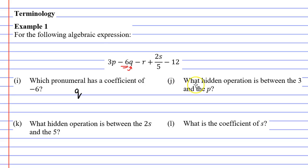Looking now at question J, what hidden operation is between the 3 and the p? So this is our 3 and our p here, and 3p is the same as saying 3 times p. Whenever a number is next to a pronumeral, it means we are multiplying. So we will write that the hidden operation is multiplication.